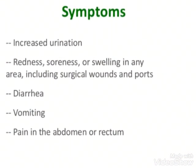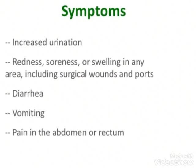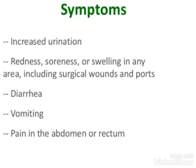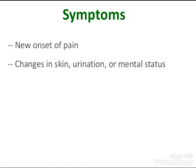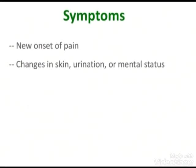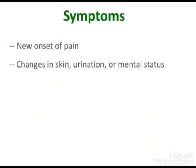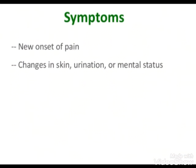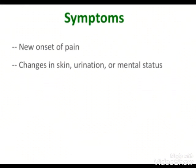Further symptoms include redness, soreness, or swelling in any area including surgical wounds. Then diarrhea, vomiting, pain in the abdomen or rectum, new onset of pain, changes in skin, urination, or mental status. These are all the symptoms seen when a person's immunity is weak. Chills, sweats, and fever are the onset symptoms you will notice in the patient. This decreased immunity leads to a decrease in the number of granulocytes, which can cause neutropenia.